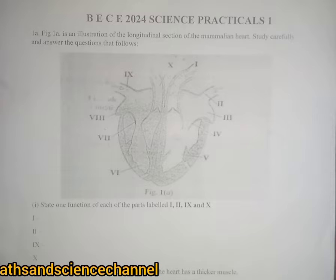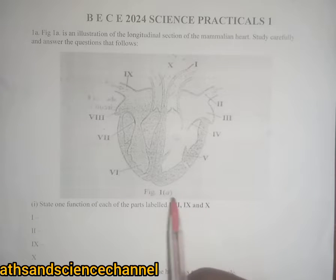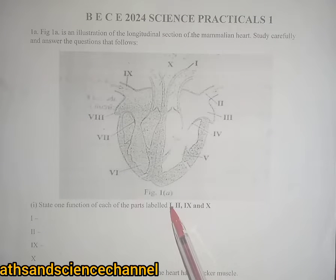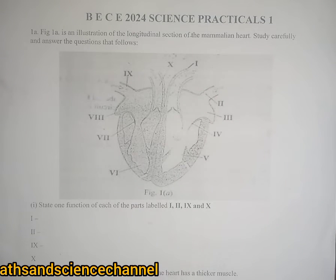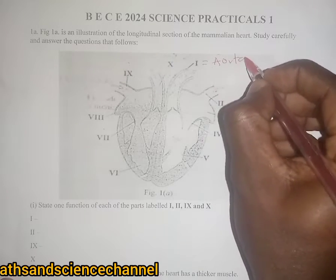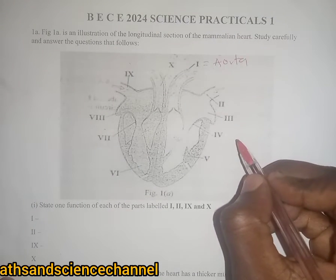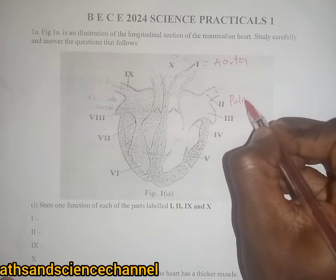Let's look at the questions that follow. The first question says: state one function of each of the following labeled parts i, ii, iii, s, n, x. Before we can state the function, we need to know what the following parts are, so let's start by labeling each and every part we see.